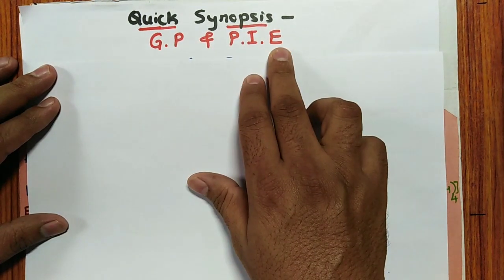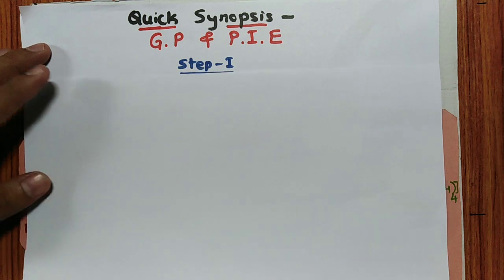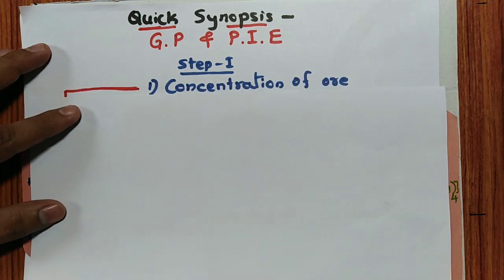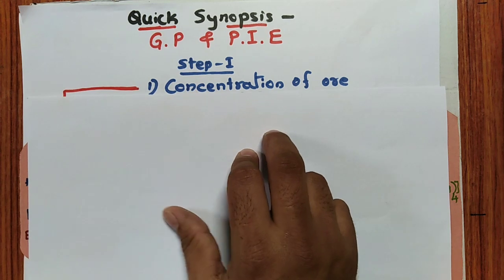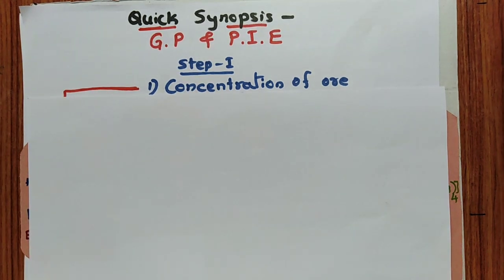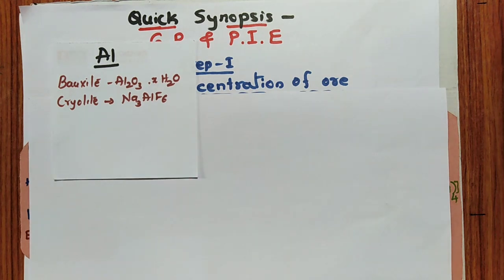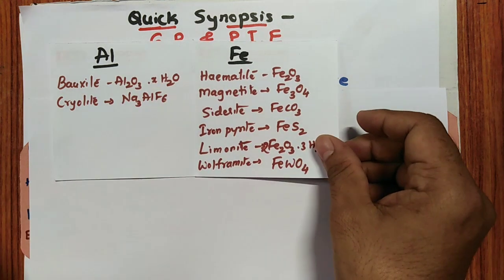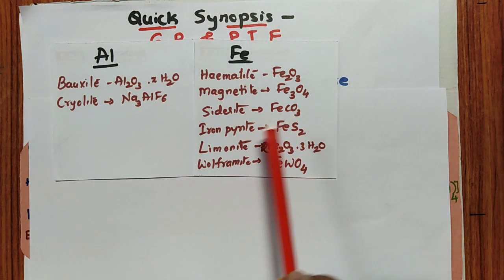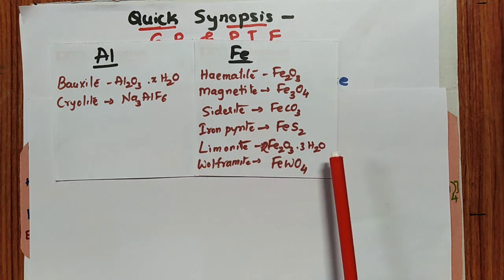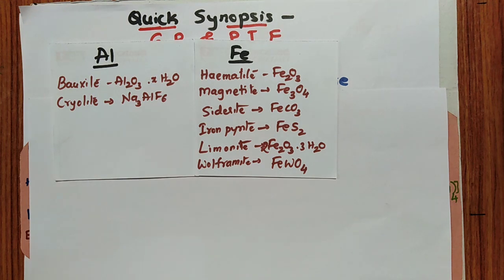General principles and process of isolation of elements — in shortcut. Remember, the first step in extraction of a metal is concentration of the ore. Important ores to remember: for aluminium, bauxite (Al₂O₃·xH₂O) and cryolite (Na₃AlF₆). For iron: hematite (Fe₂O₃), magnetite (Fe₃O₄), siderite, iron pyrite, limonite (2Fe₂O₃), and wolframite (Fe₂WO₄).